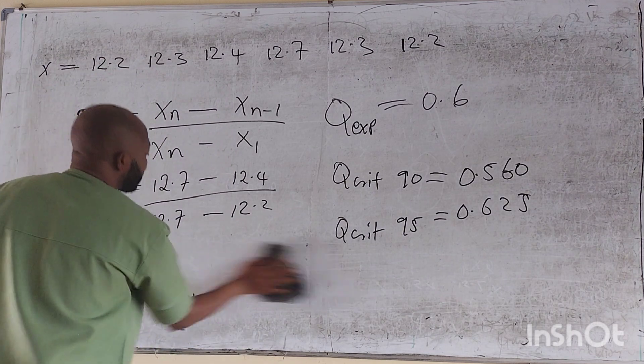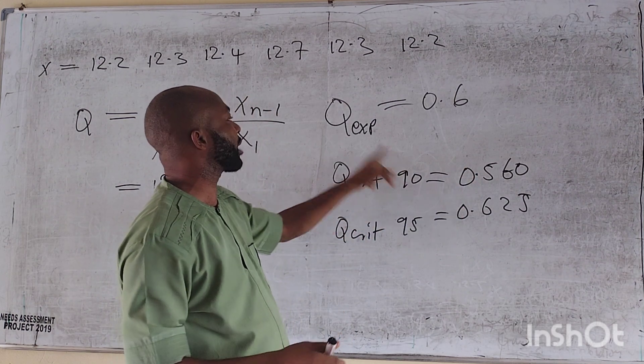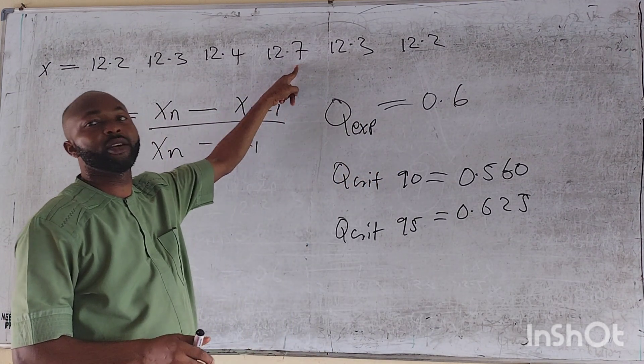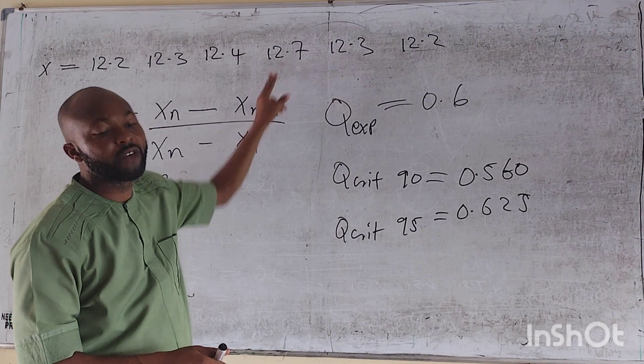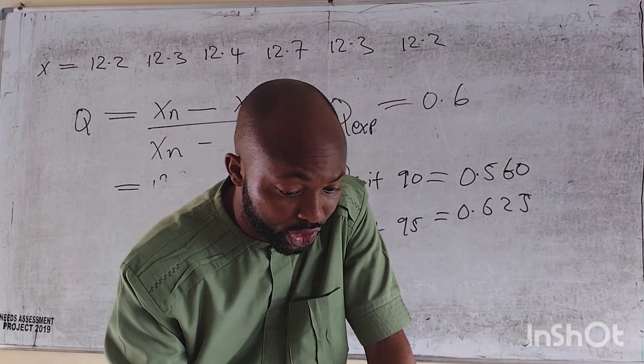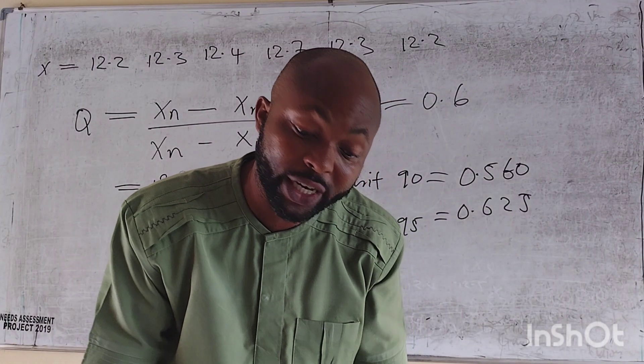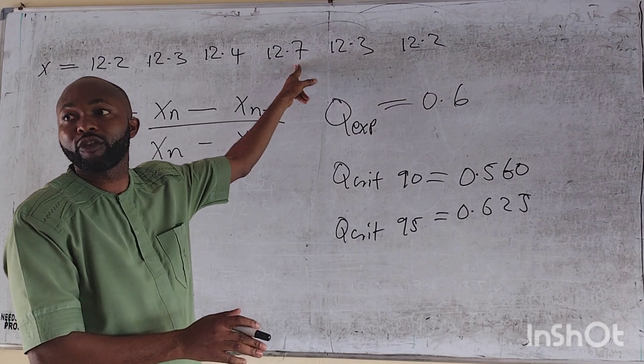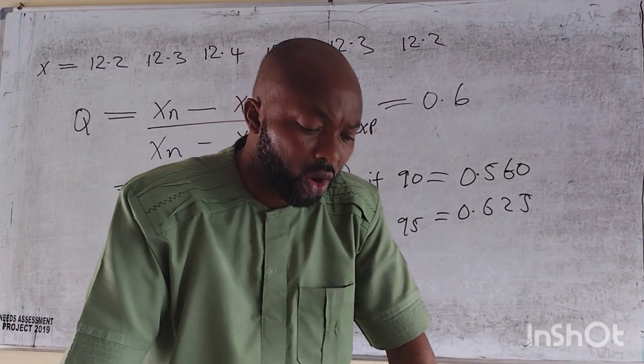Therefore, we say that since the Q-critical at 90 is 0.56, which is less than that of the Q-experiment 0.6, the outlier 12.7 should be retained. If this were to be greater, we would have rejected this. So the value should be retained. And they say if there was a random error during the experimental process. Of course, there was a random error, but the variable 12.7 is not out of place. It should still be retained.